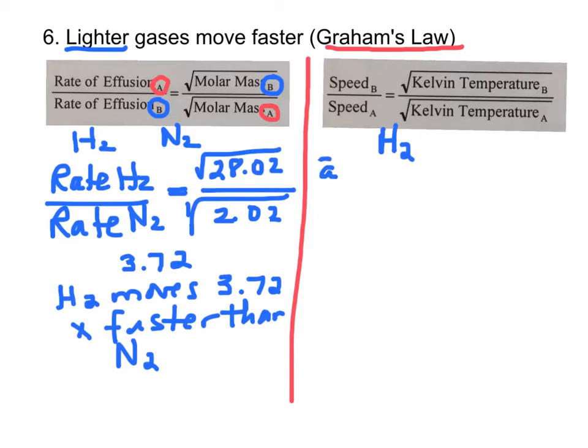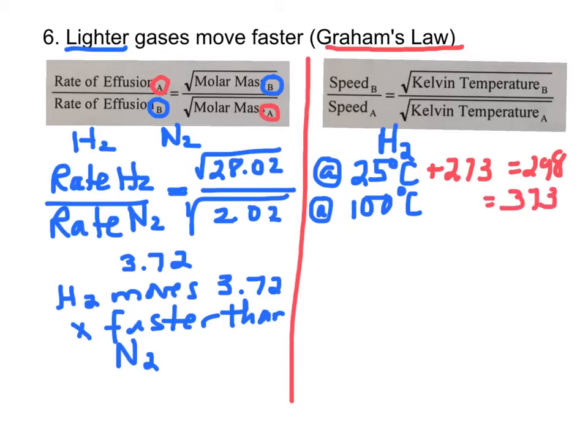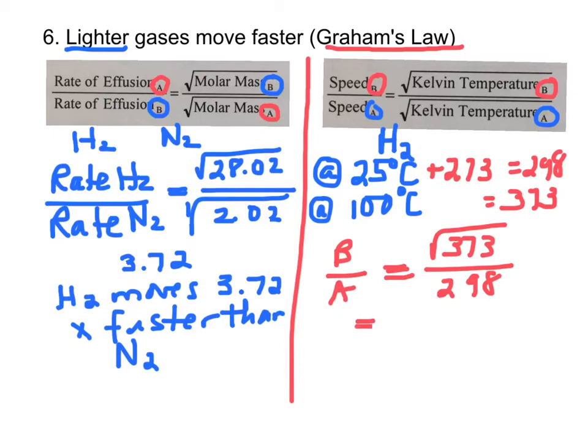So let's say, for instance, I want to look at hydrogen at 25 degrees Celsius and at 100 degrees Celsius. First thing I have to do is go ahead and change these to Kelvin. So it's Celsius plus 273, so that's 298 Kelvin. 100 plus 273 is 373 Kelvin. So then I say the speed of B over the speed of A is the square root of 373. Notice in this case, B and B are in the same place. This top A and A are in the same place on the bottom. So 298, so this is going to equal 1.12. Again, what does that mean? It means that hydrogen moves 1.12 times faster at 100 degrees Celsius than it did at 25 degrees Celsius.